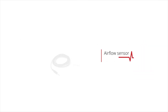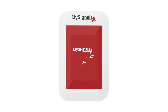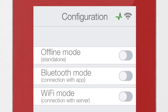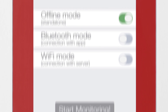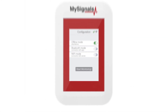How to use the Airflow sensor in MySignals. First of all, power MySignals. It goes directly to the configuration menu. Select offline mode in the menu and click on the start monitoring button.